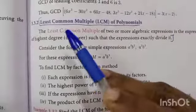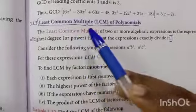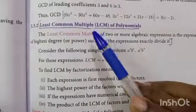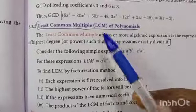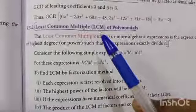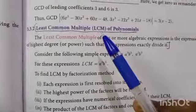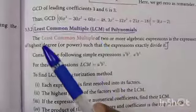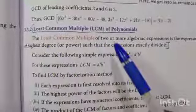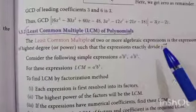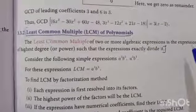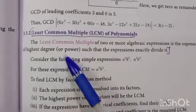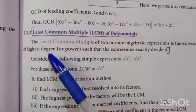Now you are going to learn least common multiple of polynomials. LCM means the product of common factors and independent factors. The least common multiple of two or more algebraic expressions is the expression of the highest degree or power.